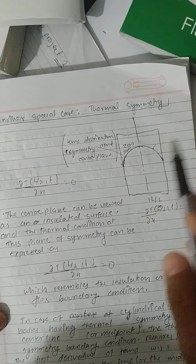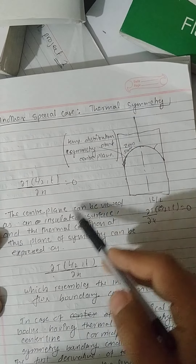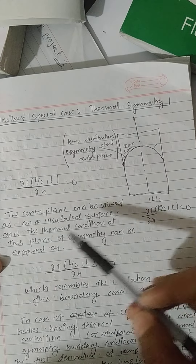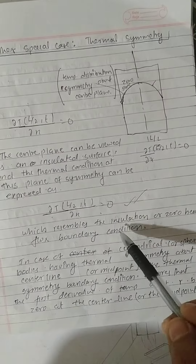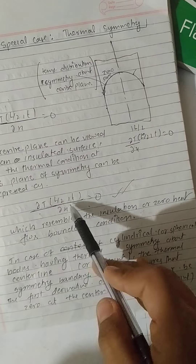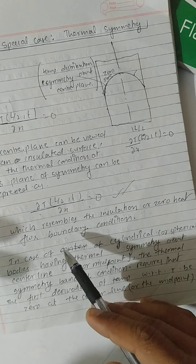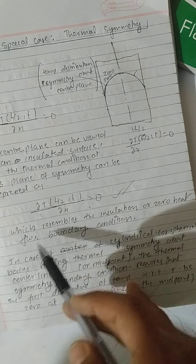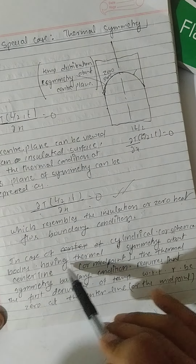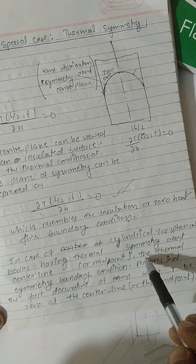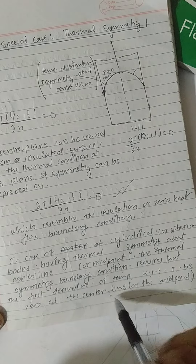Another special case is thermal symmetry. The temperature distribution symmetric about a central plane means the central plane can be viewed as an insulated surface. The thermal condition at this plane of symmetry resembles the insulation or zero heat flux boundary condition. For cylindrical or spherical bodies having thermal symmetry about the centerline or midpoint, the condition requires that the first derivative of temperature with respect to r be zero at the centerline or midpoint.